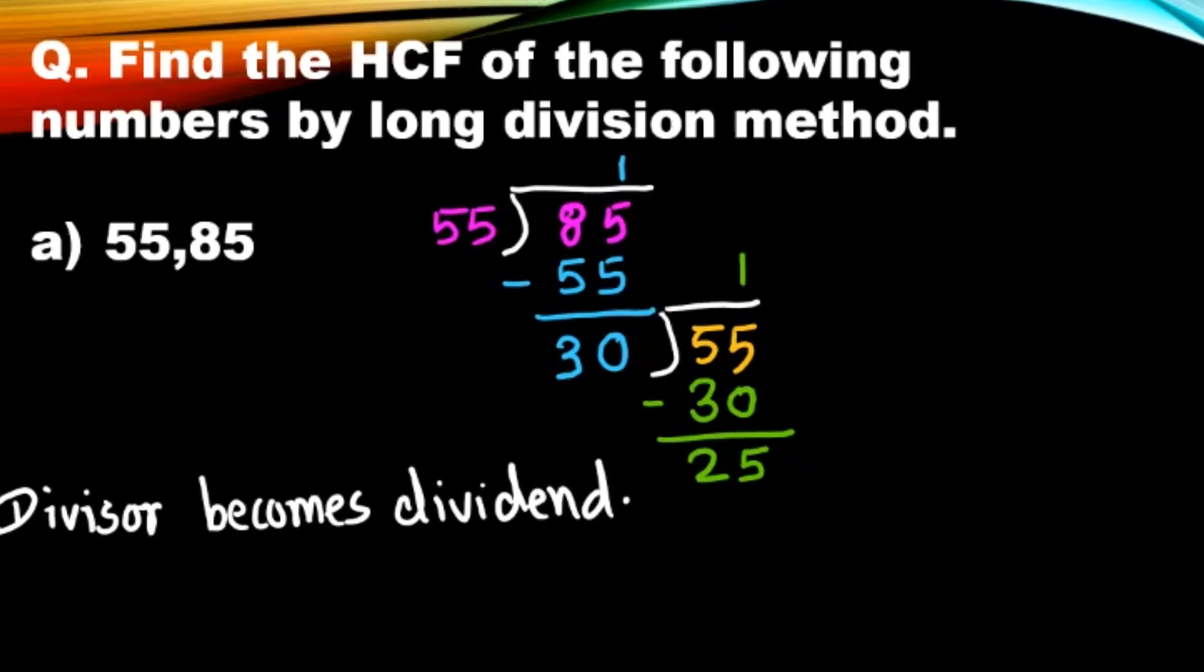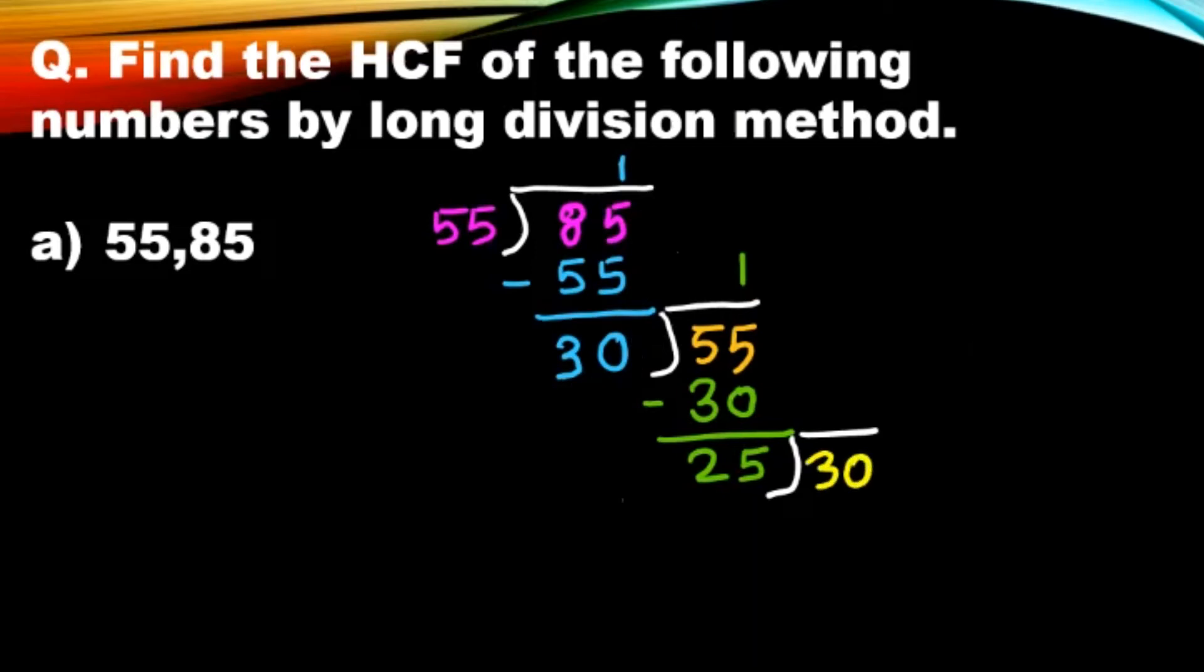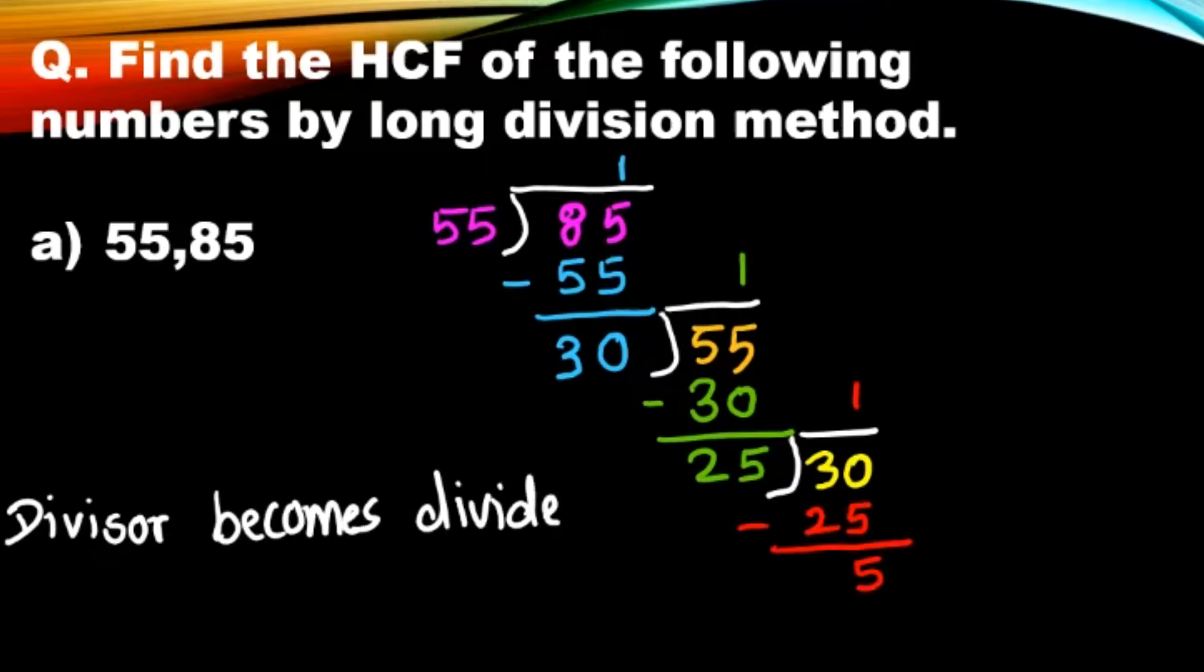This time we have 30 as the divisor, which will become dividend, and then 25 ones are 25. Now 5 is the remainder. Again we have to follow the rule: divisor becomes dividend. Here 25 is the divisor and that will become dividend.